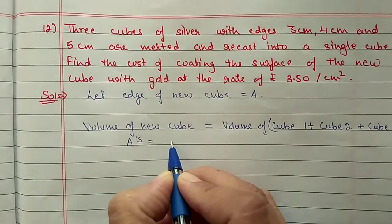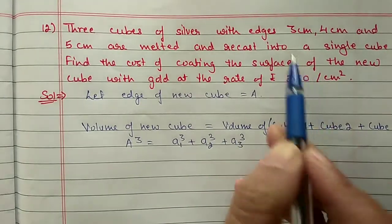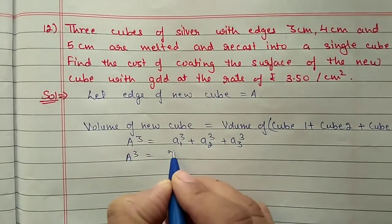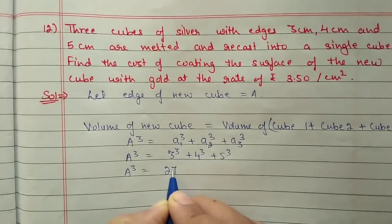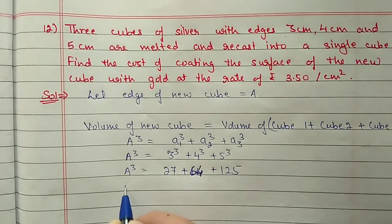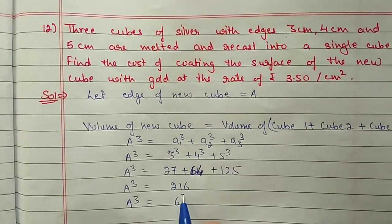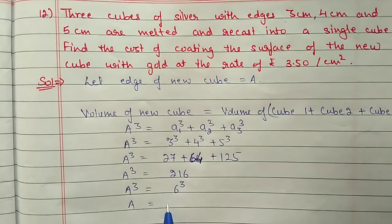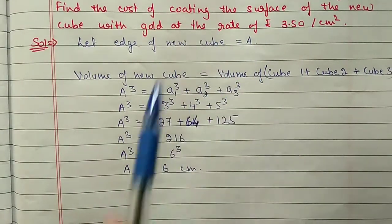Volume formula: a³ = a₁³ + a₂³ + a₃³. Substituting: 3³ + 4³ + 5³ = 27 + 64 + 125 = 216. And 216 is the cube of 6, so a³ = 6³, meaning a = 6 cm. Now for this big cube we find the surface area and then the cost of coating.